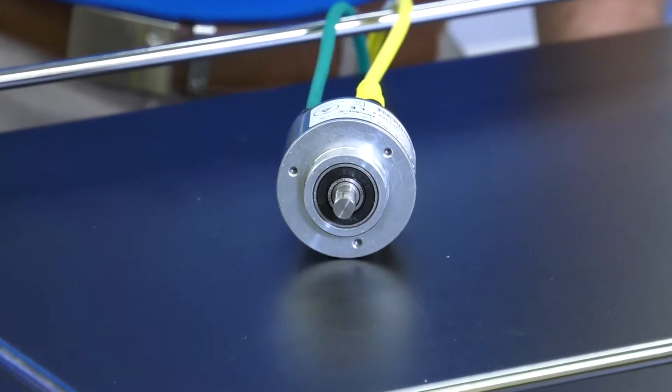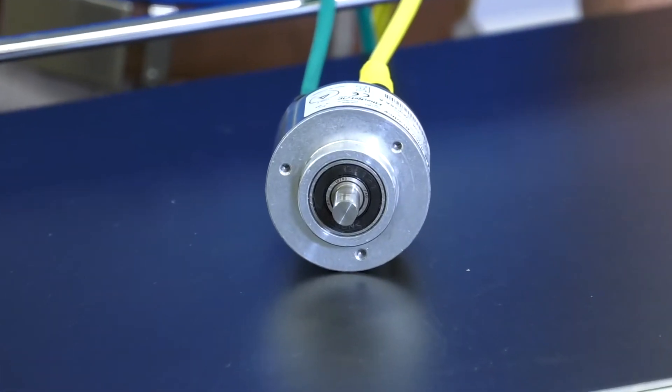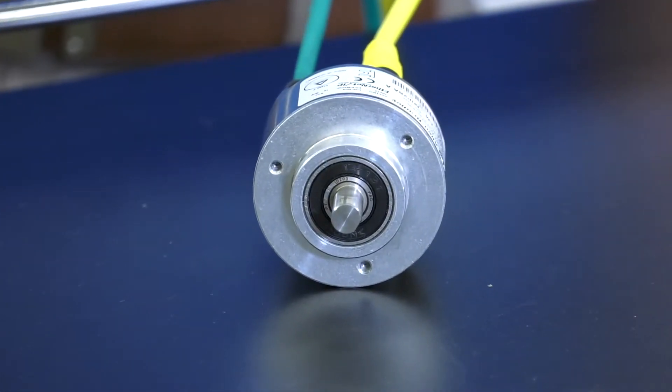Once you've got that set up, you can use this encoder to do things like gear another axis or cam another axis off of, or just use it as a feedback only access.